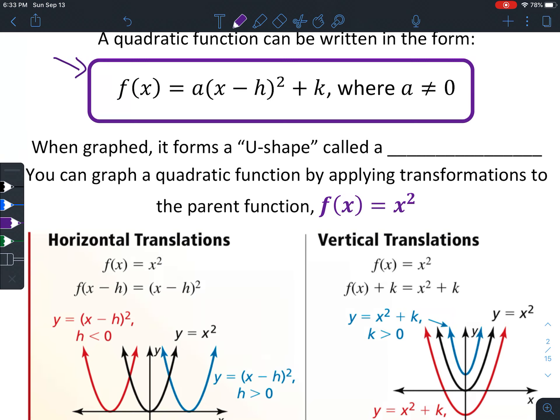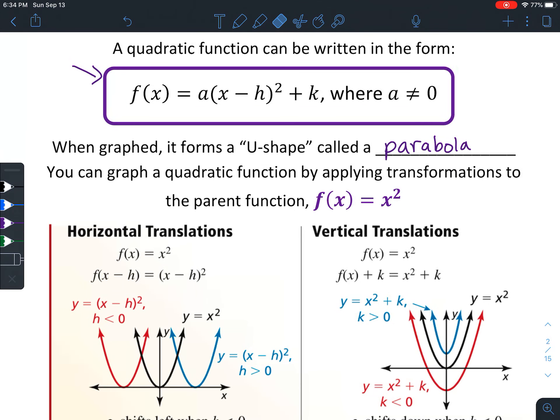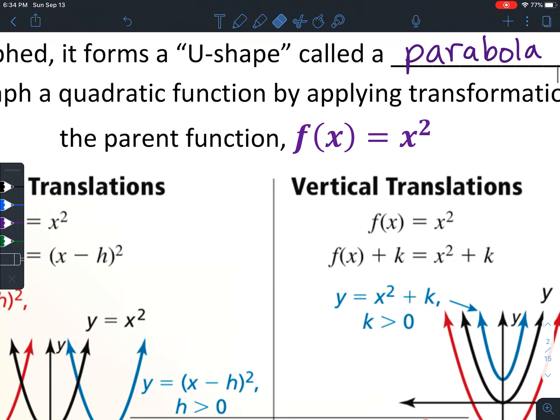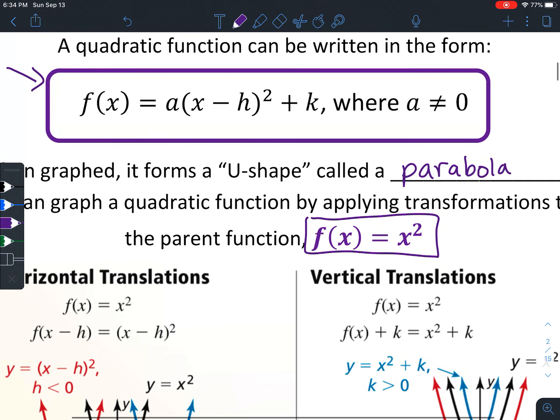When graphed, a quadratic function forms a u-shape called a parabola. Now u-shape's in quotation marks because it's not really a u-shape. It just kind of looks like a u-shape. A u generally goes straight on each side. You'll notice that these aren't exactly straight. They're always still slightly going outward. So it's not exactly a u-shape, but it helps you remember that's what it looks like.